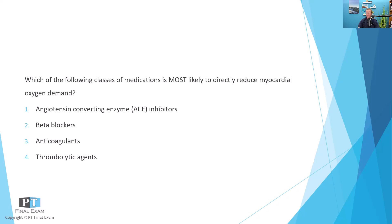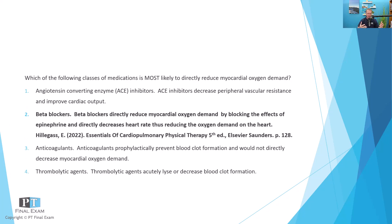This question is asking about how to directly reduce myocardial oxygen demand — meaning you are reducing the amount of activity of the muscle or the system so it doesn't have as much oxygen demand. The clear answer here is beta blockers, because their job is to reduce heart rate. By reducing heart rate, you are subsequently reducing the demand on the system. If your heart is at rest while you're sleeping, there's very little demand, but when you're running a sprint it has a lot more oxygen demand.